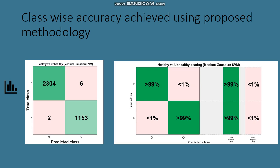The confusion matrix shows that 2 out of 1155 healthy records are misclassified, and 6 out of 2310 unhealthy faulty samples are detected at the healthy level by SVM medium Gaussian.